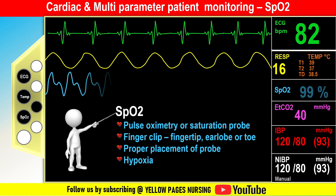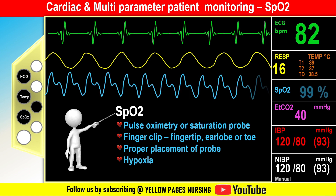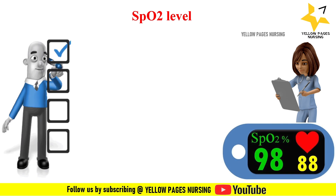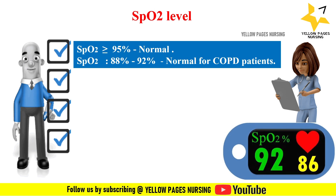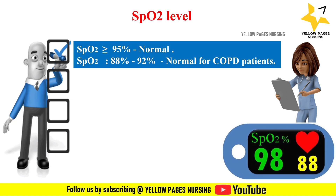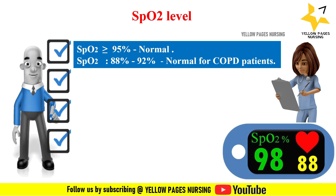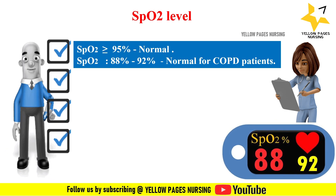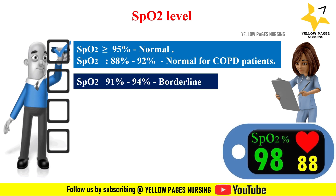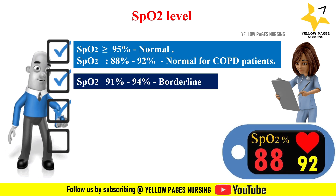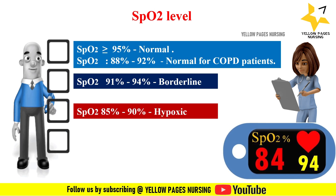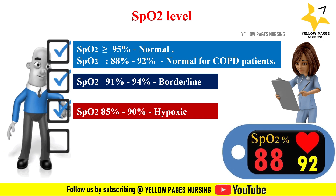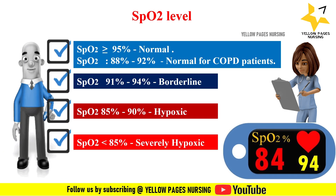SpO2 level interpretation: 95% and above is considered normal. Between 88–92% is normal for COPD patients. Between 91–94% is considered borderline. Between 85–90% indicates hypoxia, and below 85% indicates severe hypoxia.